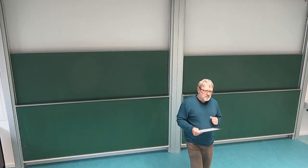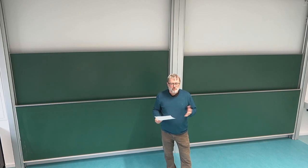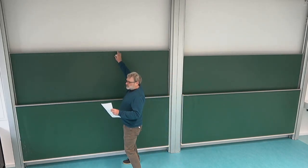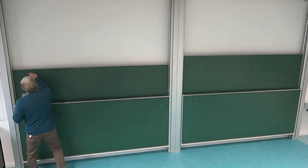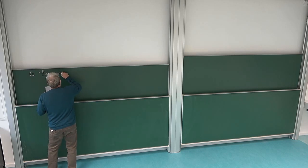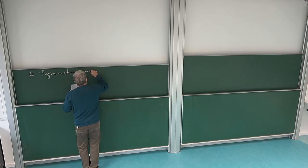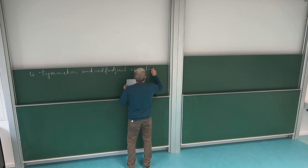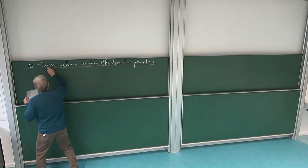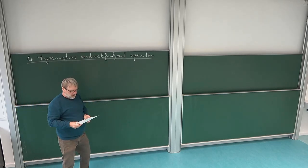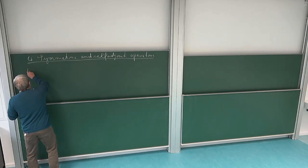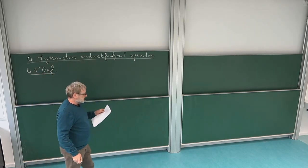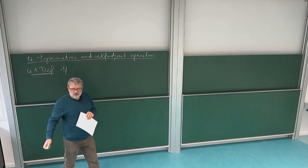Now we want to talk about the main property of operators — unbounded operators — which we want to consider, namely self-adjointness. In the case of unbounded operators we have to distinguish between symmetric and self-adjoint. This chapter will be about symmetric and self-adjoint operators. Of course our operators will typically be unbounded. For bounded operators we already know what self-adjoint means and there is no difference between symmetric and self-adjoint. But in the unbounded case, there are different possibilities for what self-adjoint should mean.